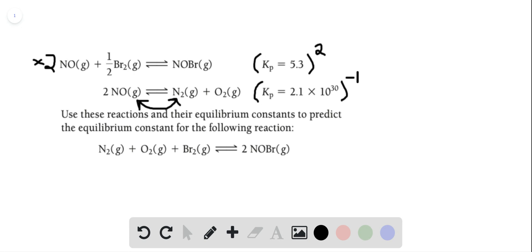So the final equation is Kp equals 5.3 squared times 2.1 times 10 to the 30th raised to the negative 1.